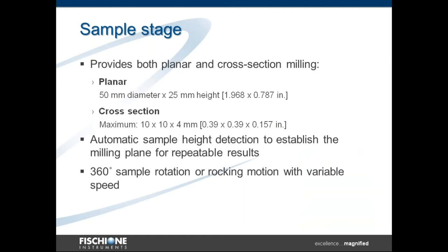The sample stage is capable of accepting both planar and cross-section samples. In the planar mode, the maximum size is 50 millimeters in diameter by 25 millimeters high, and in cross-section mode, it goes up to 10 millimeters by 10 millimeters by 4 millimeters. As with many of our ion milling systems, the try-on mill features automatic sample height detection to establish the milling plane, and this adds to very repeatable results. Sample motion is either with full 360-degree rotation or rocking with variable speed, depending on the material characteristics and your desires for the specimen preparation.